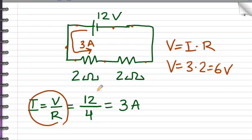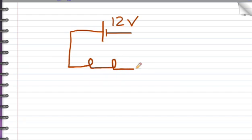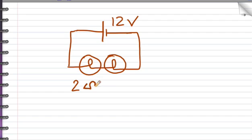Let's do another example where the resistors are not identical. Suppose we still have a 12-volt battery, but let's say we have a couple of light bulbs. And the bulbs aren't identical. This one has a resistance of 2 ohms, and this one has a resistance of 4 ohms.